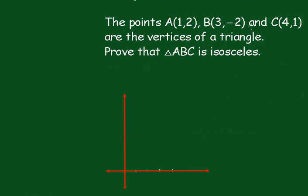I'll write that down as 1, 2, 3, and 4. And this one goes down to minus 2, up as high as 2. So A is (1,2): across 1, up 2. There's A.